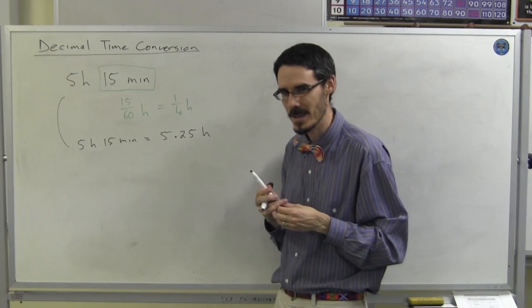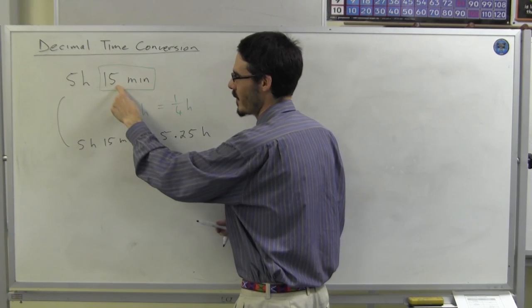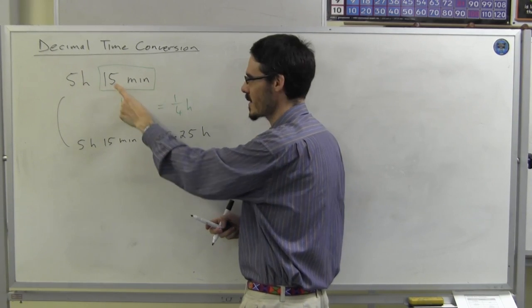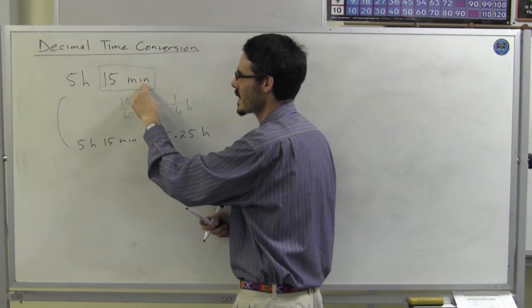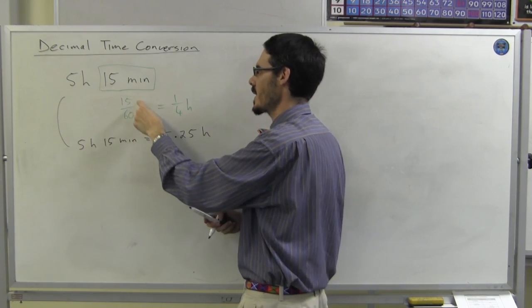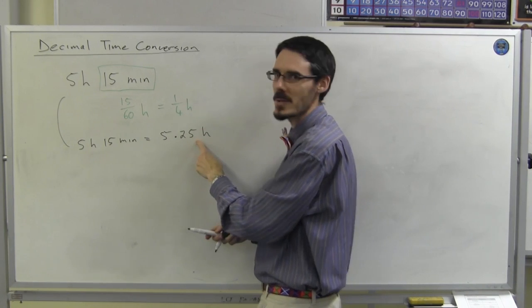Does that make sense? We can't just go 0.15. It's not 15 out of 100. It's 15 out of 60. Because there's 60 minutes in an hour. It's a quarter of an hour, 0.25.